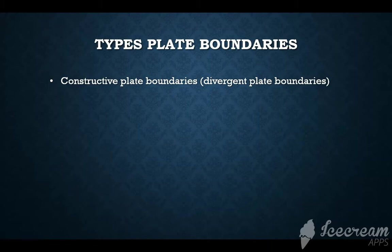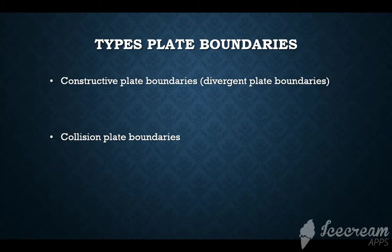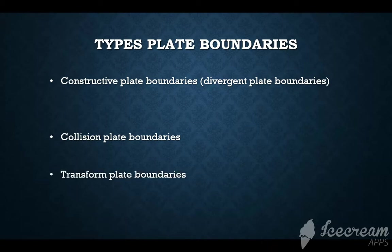The first type of plate boundary is known as the constructive plate boundary, where plates diverge or move away from each other. The second type is known as the collision plate boundary, where plates of the same type move towards each other — continental plate and continental plate moving towards each other, forming what we call fold mountains. We also have transform plate boundaries, where plates slide past each other.